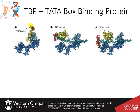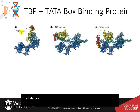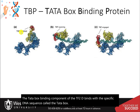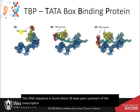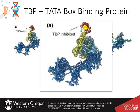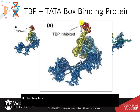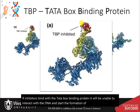The TataBox binding component of TF2D binds with a specific DNA sequence called the TataBox. This DNA sequence is found about 30 base pairs upstream of the transcription start site in many eukaryotic gene promoters. If inhibitors bind with the TataBox binding protein, it will be unable to interact with the DNA and start the formation of the pre-initiation complex.